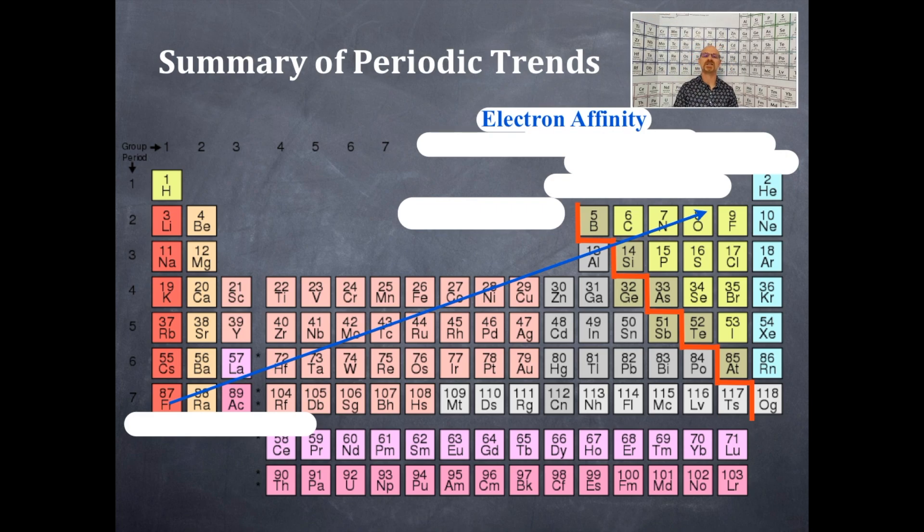So electron affinity is increasing as the arrow moves up and to the right. Electronegativity follows the same trend. That is, electronegativity increases as you move up and to the right.